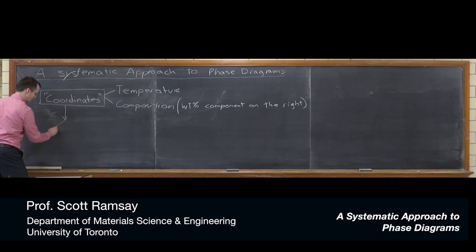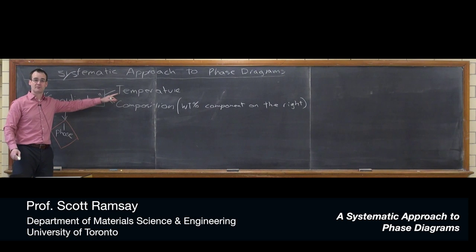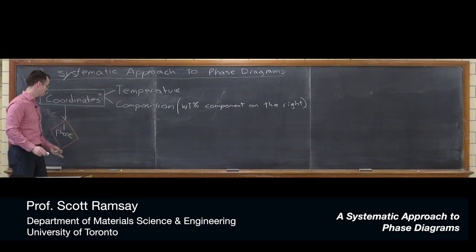And then here's a decision point or a question that you can ask yourself. You can say, I've got some coordinates and I've placed it on the phase diagram. Is there a single phase present? Has this set of coordinates placed me in a single phase region on the phase diagram?